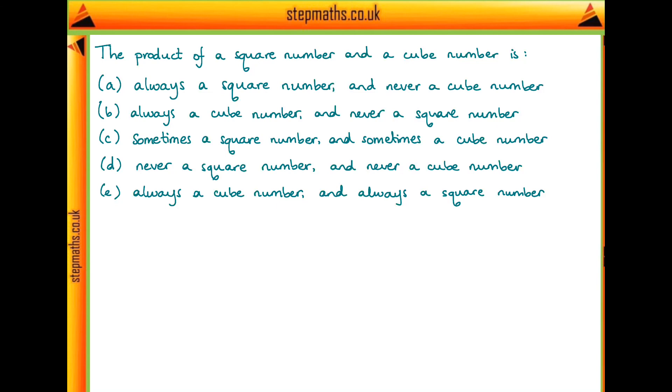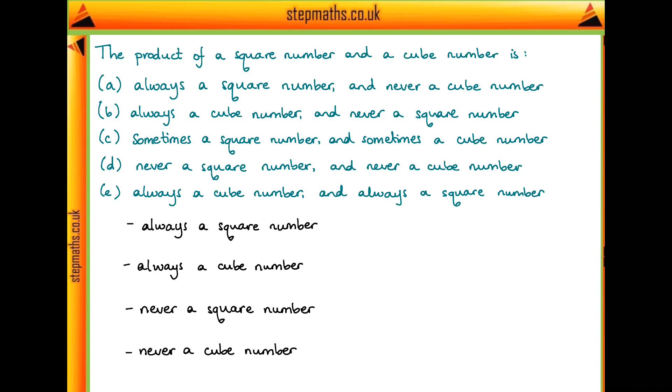We could go through each of these five statements individually and see which one fits, but all of these statements apart from C are some combination of two of the following four statements: always a square number, always a cube number, never a square number, or never a cube number.